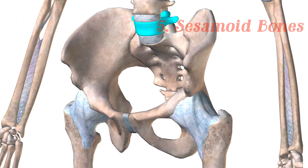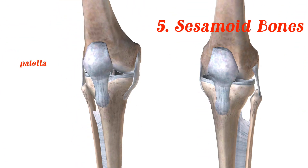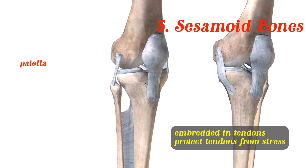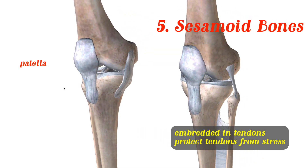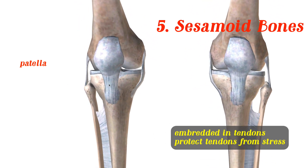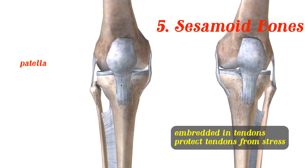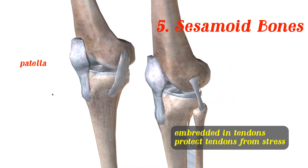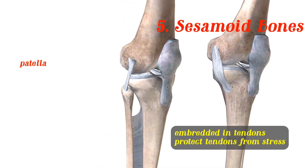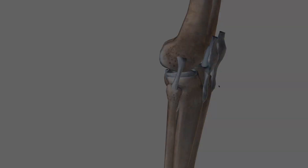Last but not least, you have your sesamoid bones. These sesamoid bones are typically embedded in tendons. You find those in your hands, your knees, and your feet. They protect the tendons from stress and wear and tear. They are suspended within tendons, not actually on bone.